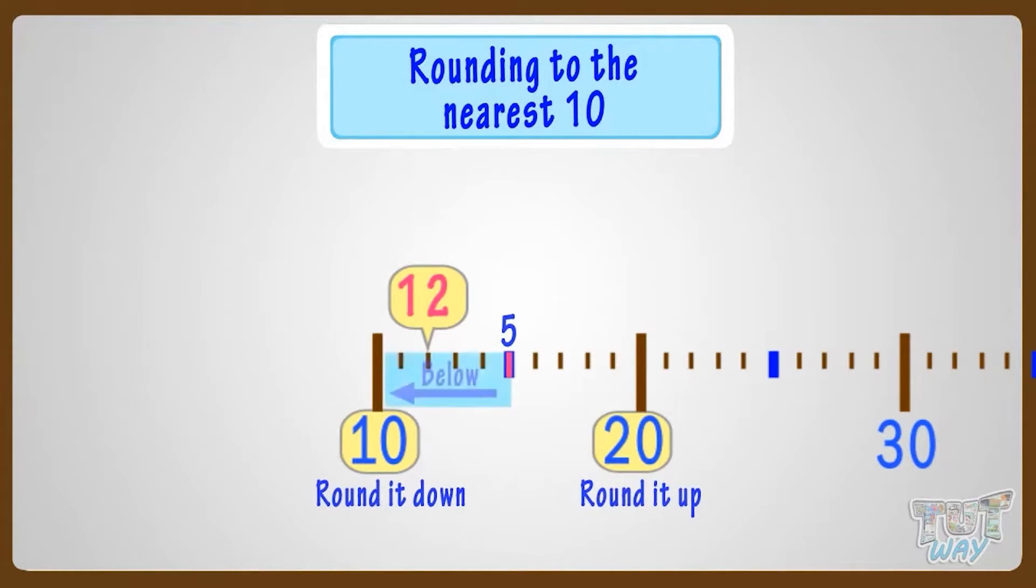If the number is below 5 mark, you round it down. That is previous 10.